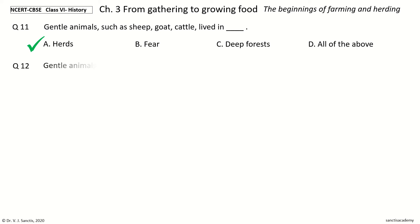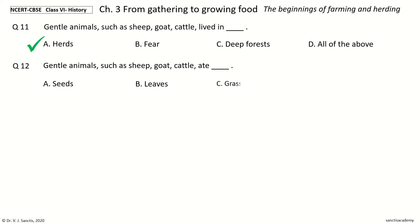Question 12. Gentle animals such as sheep, goat, and cattle ate what. The options are: seeds; leaves; grass; animals. And the answer is grass.